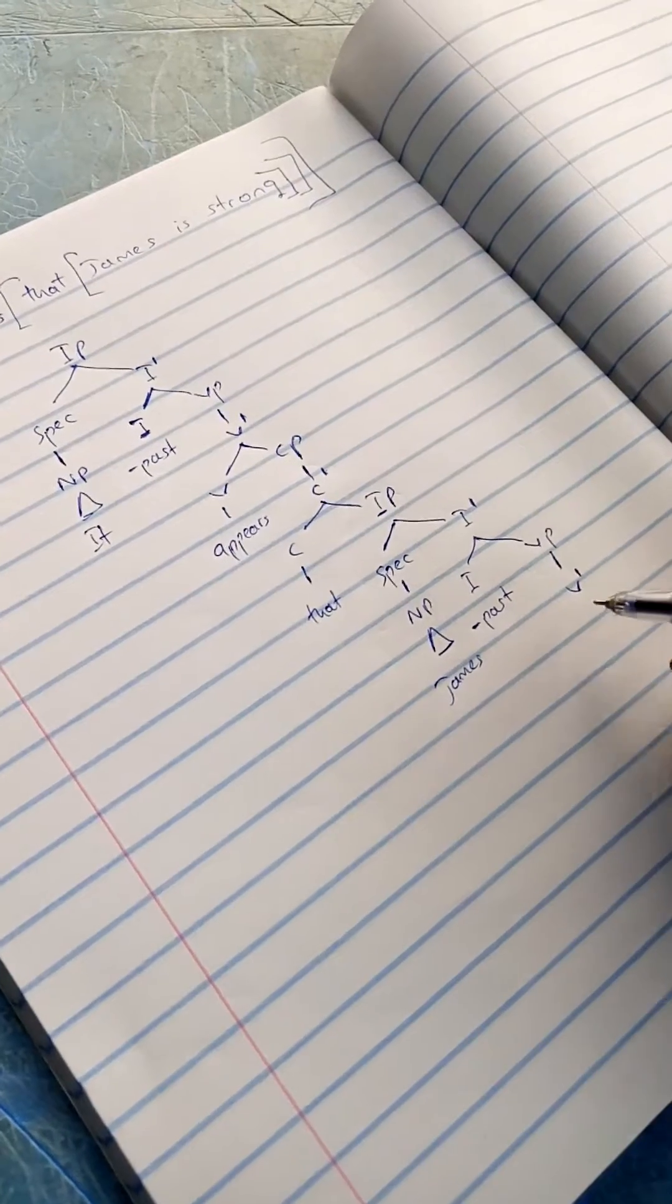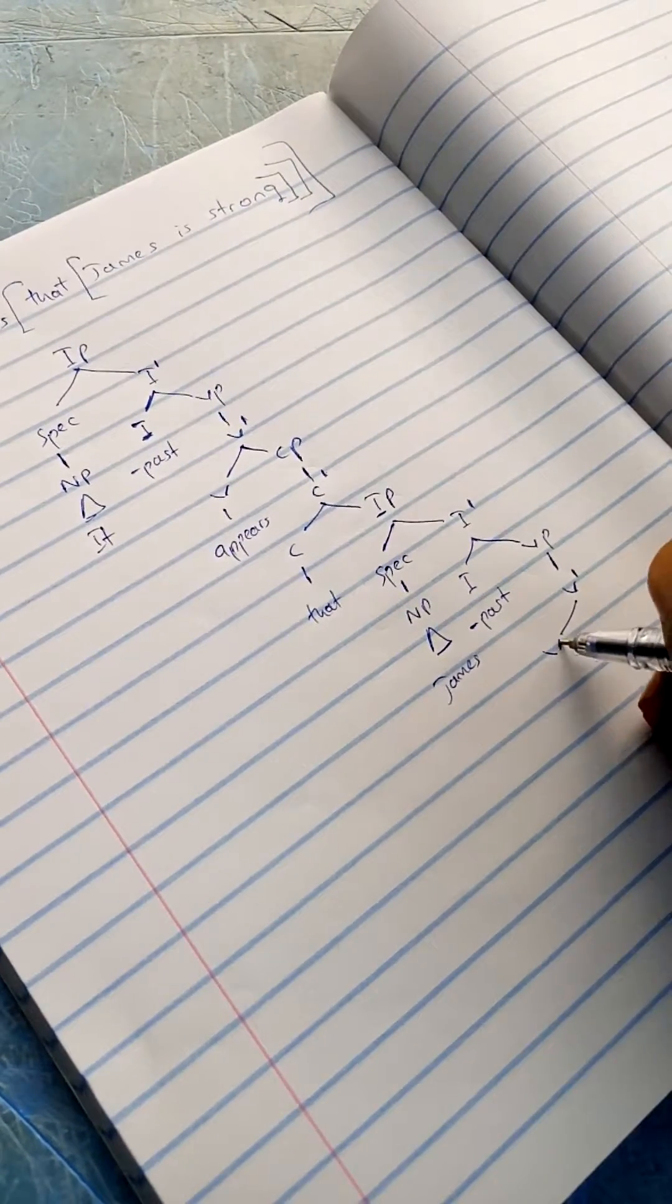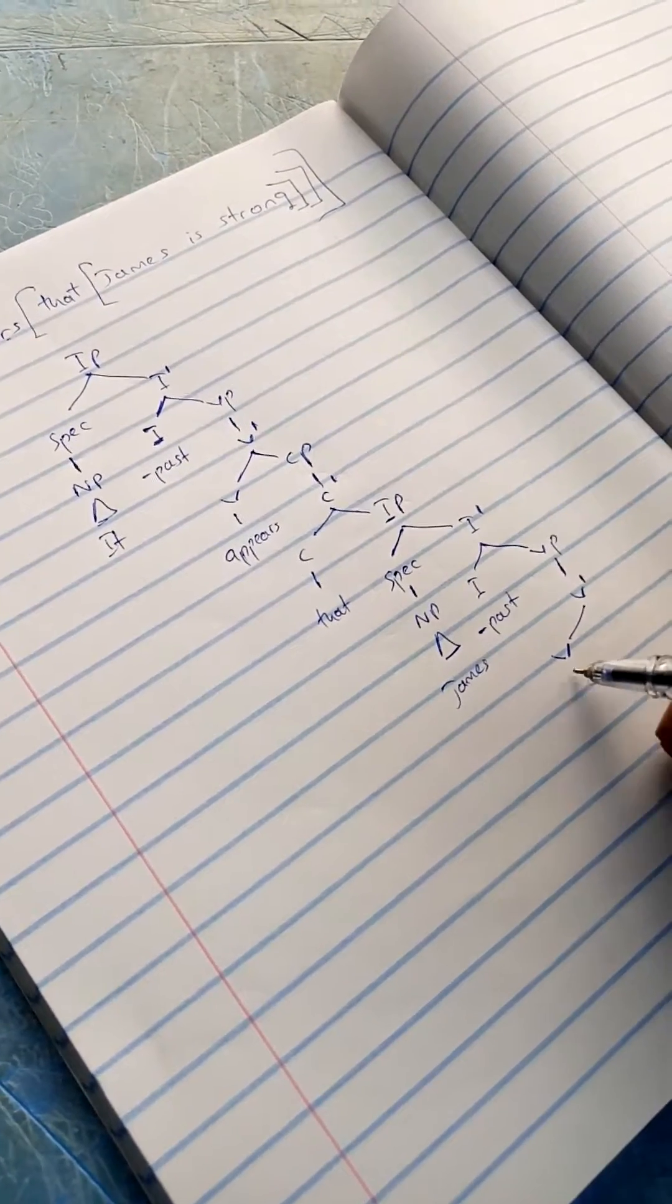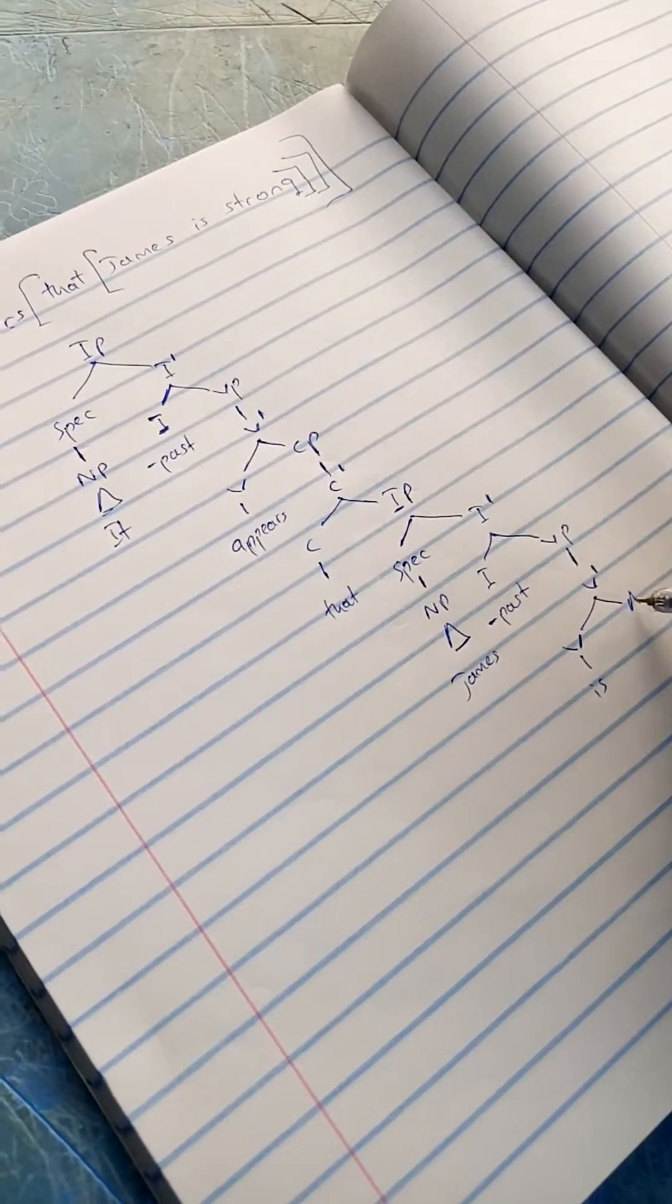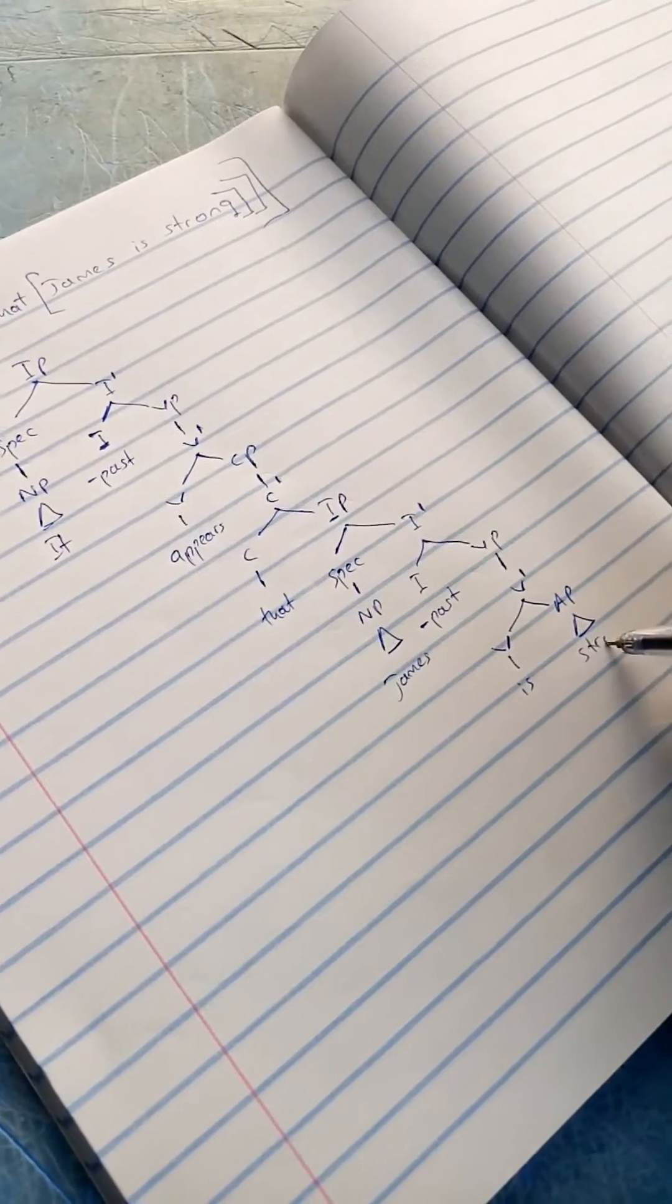You have the I and then your VP. The VP expands as the V-bar, and then you have your V, which is 'is', and then you have your adjective phrase, which is 'strong'.